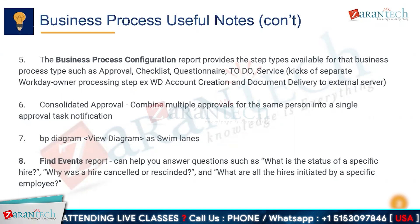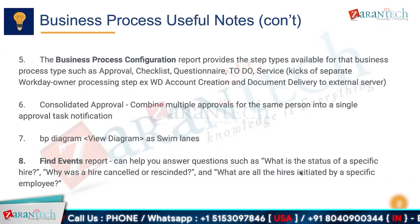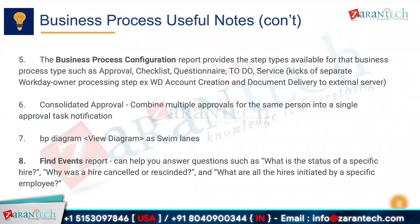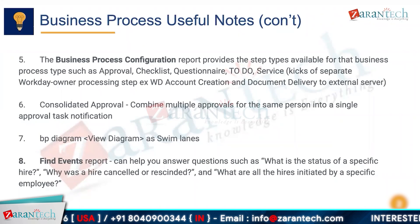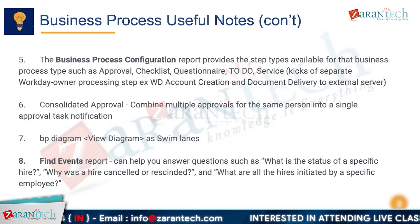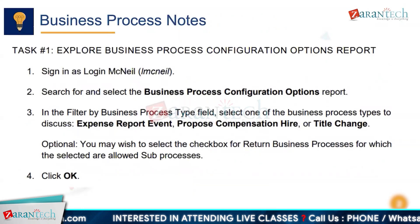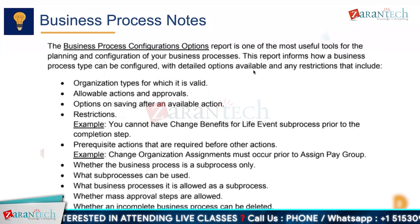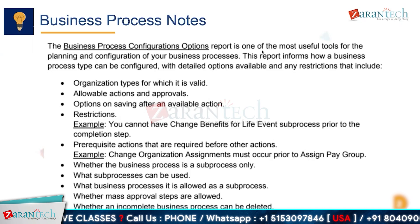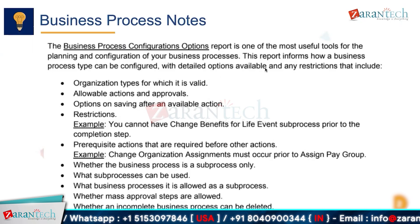Consolidated approval can combine multiple approvals for the same person into a single approval task notification. The Find Events report can help you answer questions such as: what is the status of a specific hire, why was a hire cancelled or rescinded, and what are all the hires initiated by a specific employee. The Business Process Configuration Options report is one of the most useful tools for planning and configuring your business process.